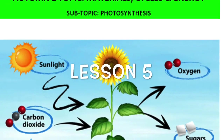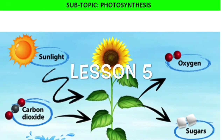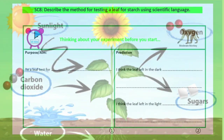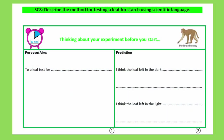Welcome to lesson 5 on photosynthesis. Today we're going to be doing SC8: describe the method for testing a leaf for starch using scientific language. We're going to be testing two leaves for starch — one that's been left in the dark for 24 hours before the test and one that's been in the light for 24 hours before the test.